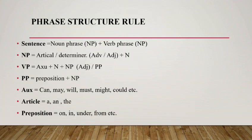Now I will discuss phrase structure rules. A sentence is divided into two parts: number one is noun phrase, and number two is verb phrase. Noun phrase mentions article and determiner, adverb and adjective, and noun. Verb phrase mentions auxiliary words, verb, noun phrase, and prepositional phrase. Prepositional phrase mentions one preposition and noun phrase.